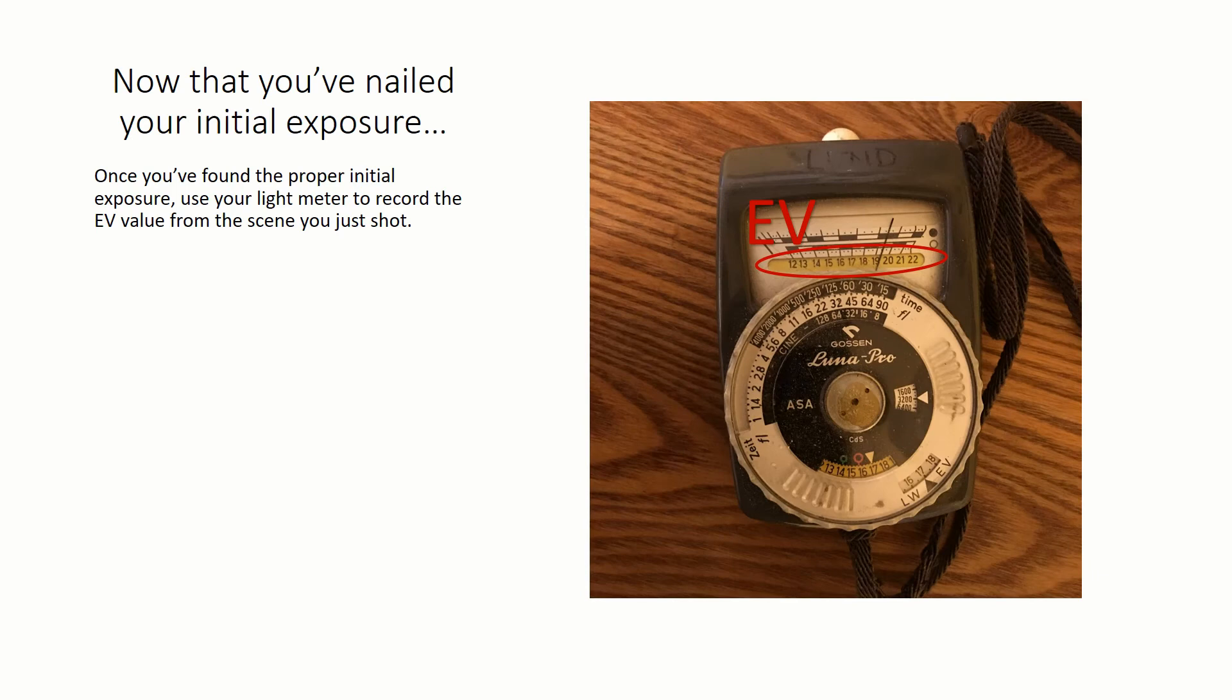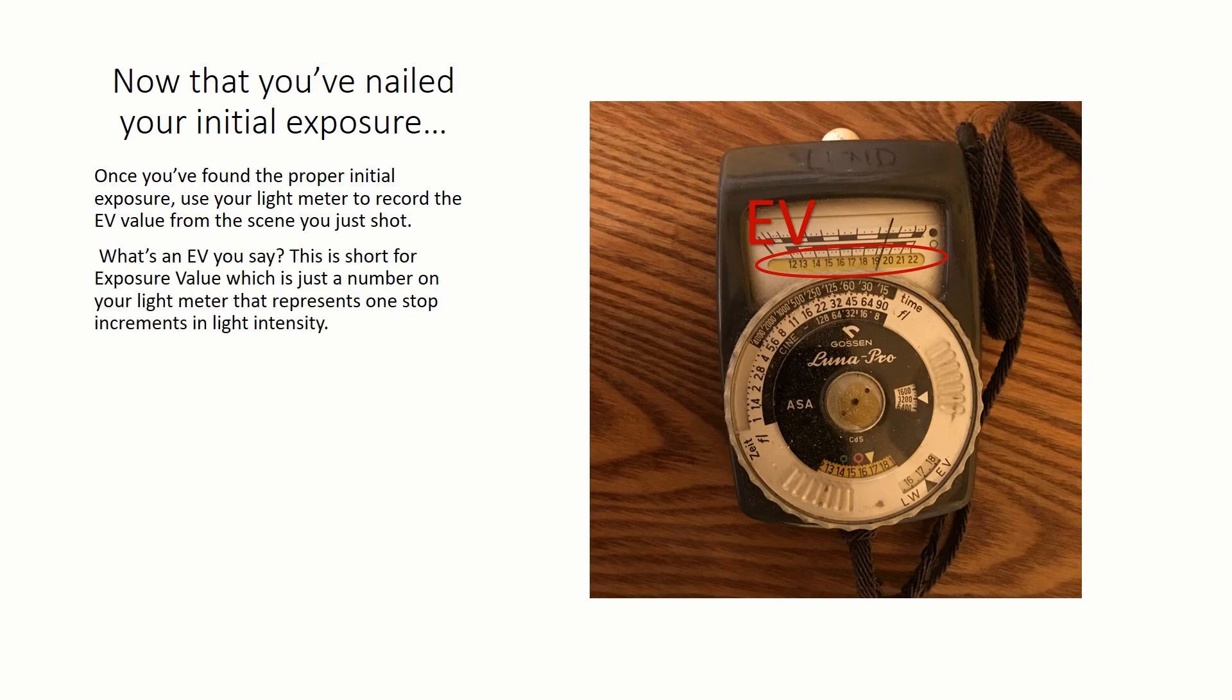Once you've found the proper initial exposure, use your light meter to record the EV value for the scene you just shot. What's an EV, you say? This is short for exposure value, which is just a number on your light meter that represents one-stop increments in light intensity. Record this in your notebook, along with the f-stop and exposure time used to make this plate. This is now your baseline exposure.